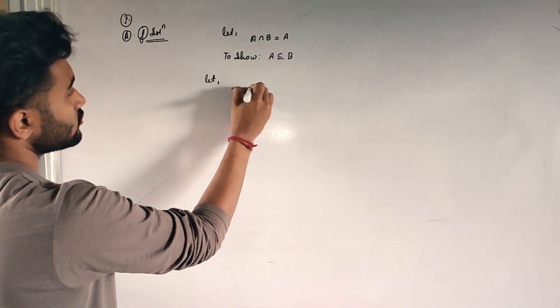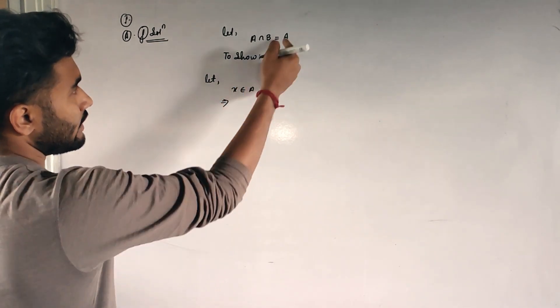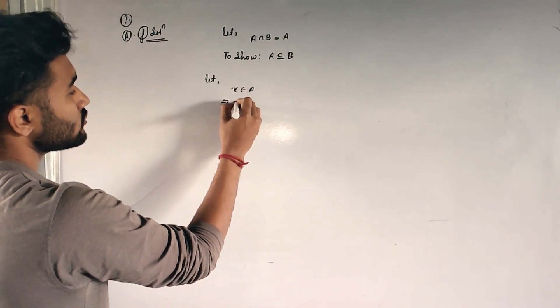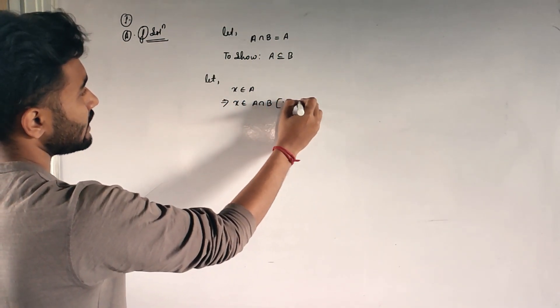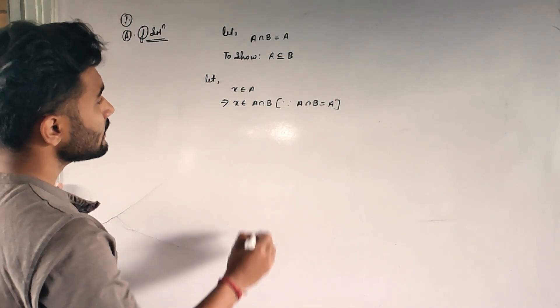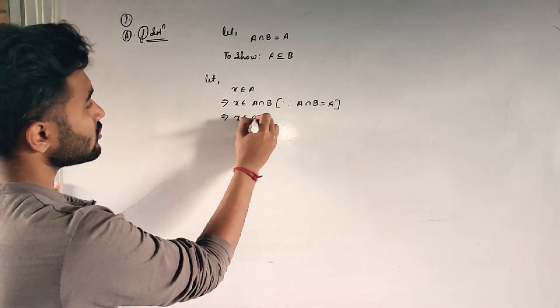Okay, at first we will show this one. So let, let I start in left side. Let X belongs to A. Now I have to go to given, right? Very easily I can go to given. Already we said that A is equal to A intersection B, so in place of A I will write what? A intersection B, since A intersection B is equal to what? Finish.